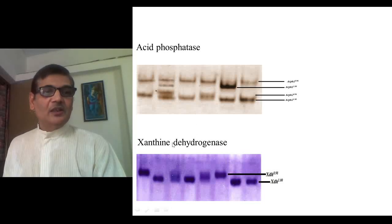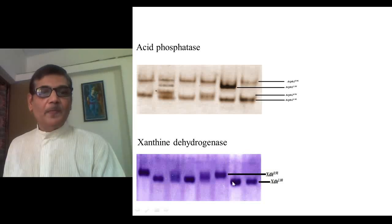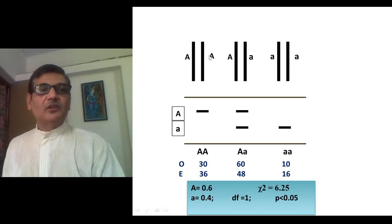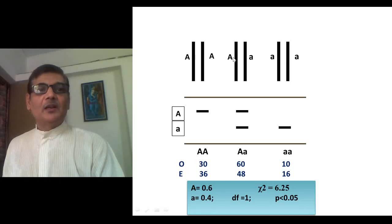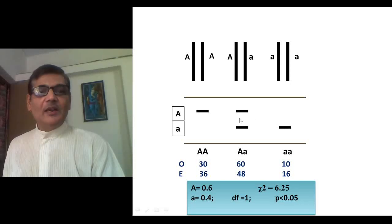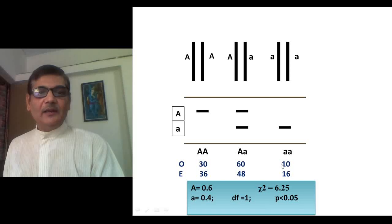In the lower case, xanthine dehydrogenase polymorphism is shown, where fast and slow variants are visible. A simple analysis is shown: in a population, three different kinds of individuals exist because of two variants, capital A and small a. Three genotype classes are possible: capital AA (homozygous dominant), capital A small a (heterozygous), and small aa (homozygous recessive). Their banding patterns in the gel are visible accordingly. For example, 100 individuals were observed and found in numbers 30 for AA, 60 for Aa, and 10 for aa.